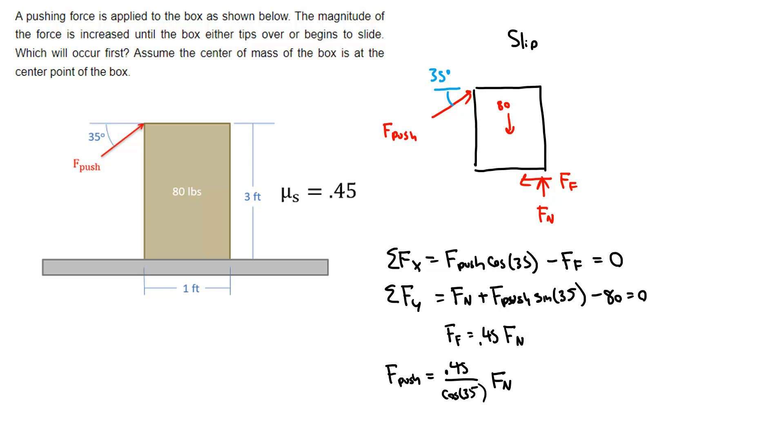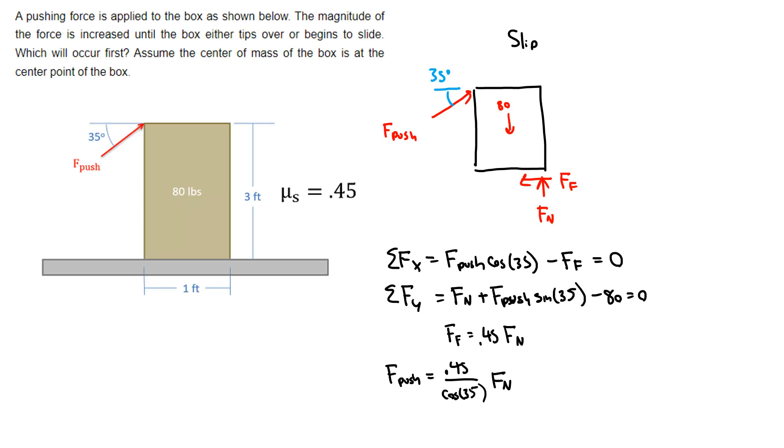So that can be substituted into the y equation, and I'm going to go to the next page now and do that. So if I have 0.45 over cosine 35 times Fn, that's getting plugged in. That's getting plugged in right here.